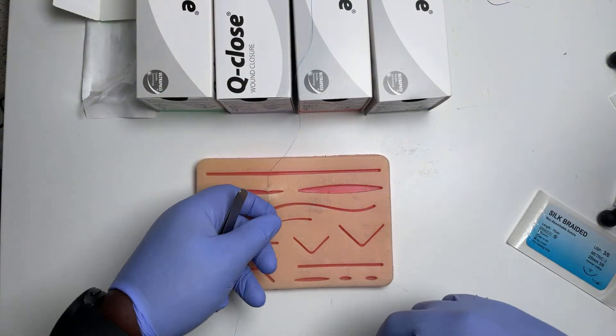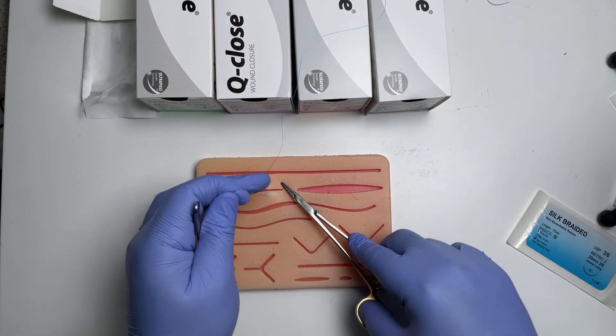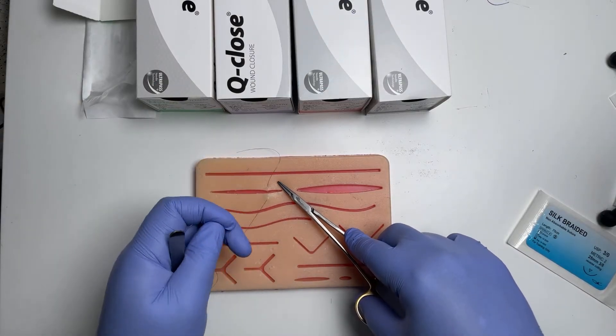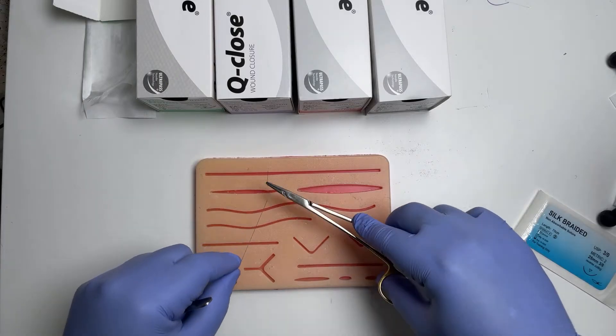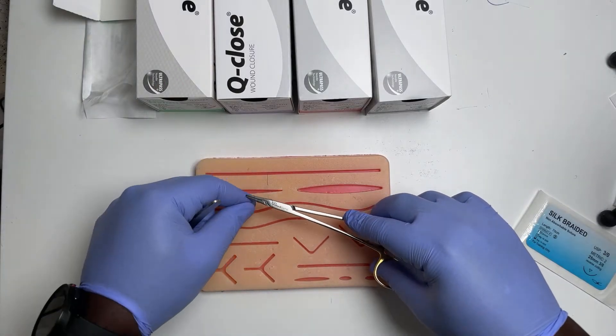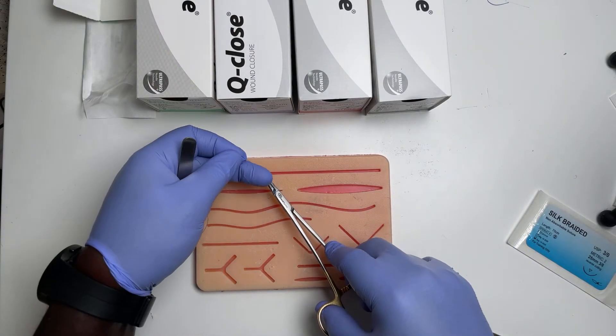Palm your forceps. With one hand, pull the suture like this and then rotate. One, two, grab the tip and tie.